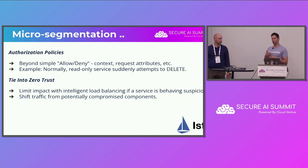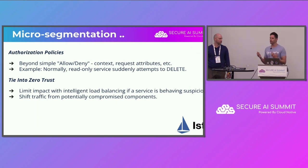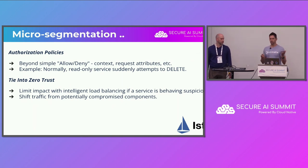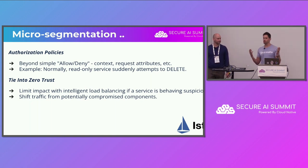Certificate-based identity scales much better than IP-based whitelisting and blacklisting, and it starts building into micro-segmentation. Once you have certificate-based identities, you can move away from allow/deny rules and provide context about what your service is, who it addresses, and whether it should have unidirectional or bidirectional communication with other services in your system.